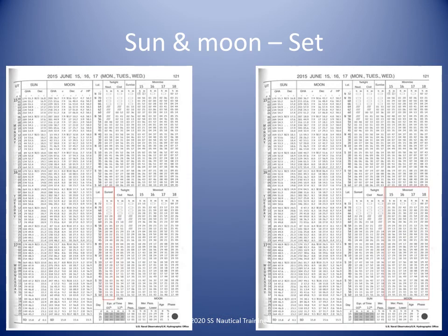The Nautical Almanac provides the same sunset time for different latitudes for three days; the sunset column is highlighted in red on the left panel. The Nautical Almanac provides the different moonset times for different latitudes for each of four days; the moonset column is highlighted in red on the right panel.